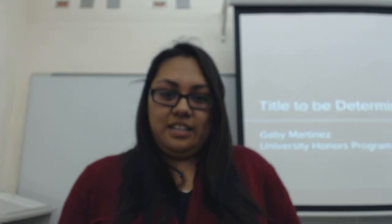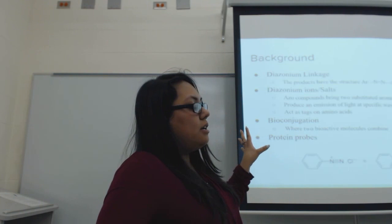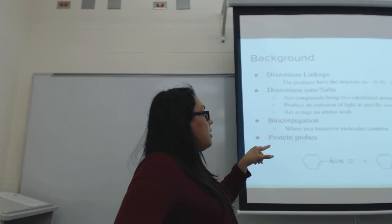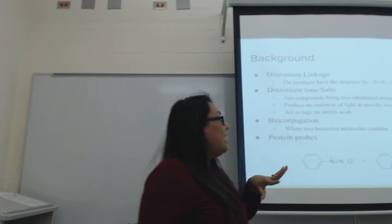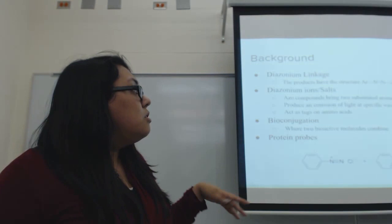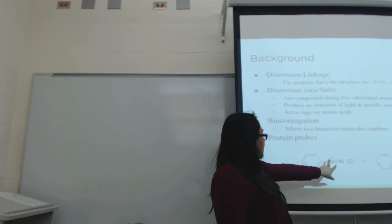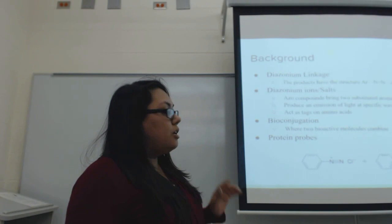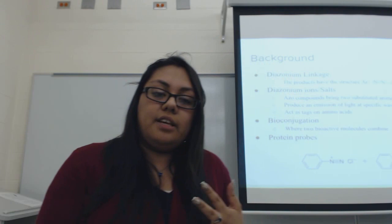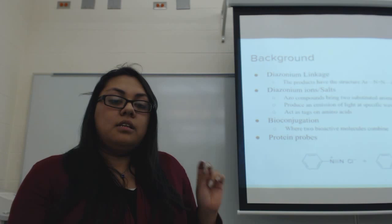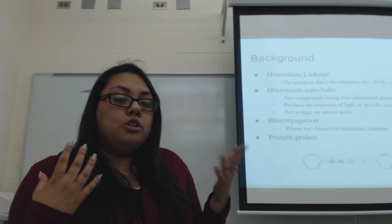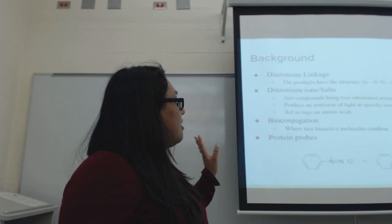Here's some background information on a few of the important things going on in my proposal. We are looking at the diazonium linkage, which is a double bond between two nitrogen atoms and two aromatic rings. The double bond between the nitrogens is called an azole linkage. We're going to be looking at diazonium ions and salts — basically a positively charged nitrogen with a triple bond — and their emissions of light with specific wavelengths. We're also looking at diazonium ions as tags on amino acids, and basically bioconjugation, which is the combination of two bioactive molecules together. How this all ties together is that they're going to be used as protein probes.